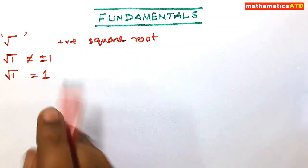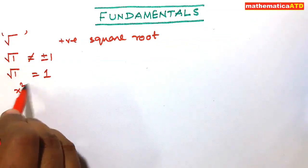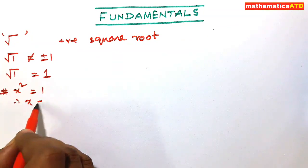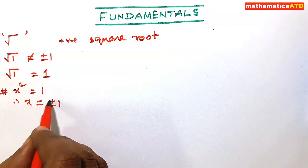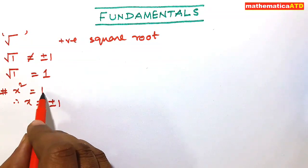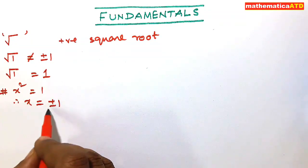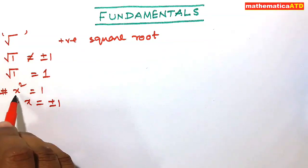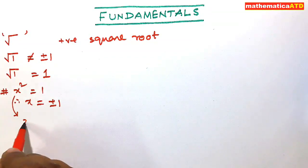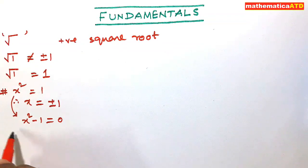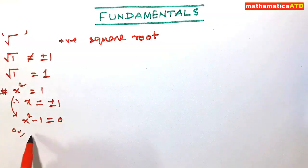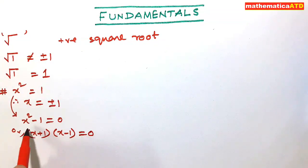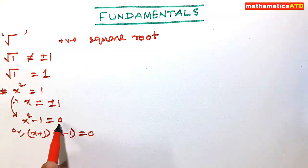But if I write x squared is equal to one, then I can write x is equal to plus minus one. You may think that the square root of one is equal to plus minus one, but this is not the case. From x squared equals one, I can write x squared minus one is equal to zero.